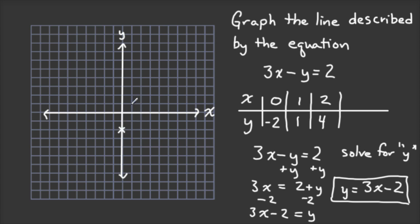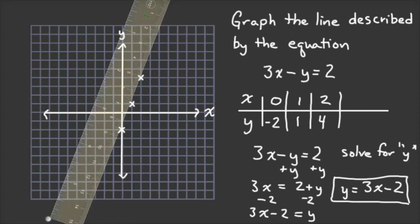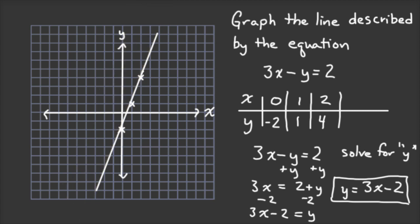And then we'll plot the points. 0 in the X direction and negative 2 in the Y direction is there. 1, 1 is there. And 2, 4 is there. I'll pull out a ruler and line up my ruler with the points. And then draw a straight line that extends beyond my points and crosses through all those three lines. I can also put on the arrows on either side to show that it goes on forever.